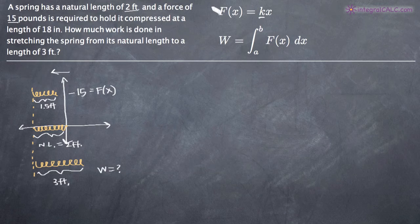Now we need to use first this formula for force and second this formula for work. So for the force formula, we know that the force to compress the spring to a foot and a half is negative 15 foot pounds. So we can plug in negative 15 for f(x), because we know that that's the force. We're trying to solve for the constant k.